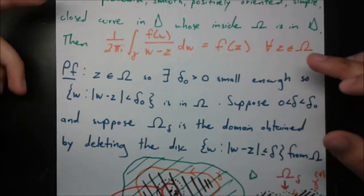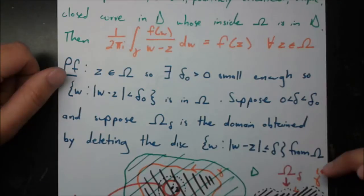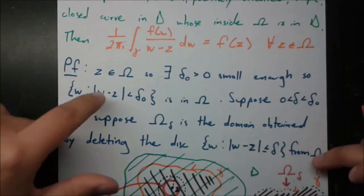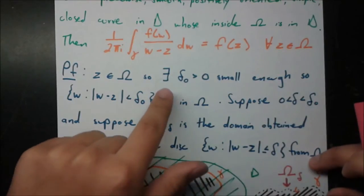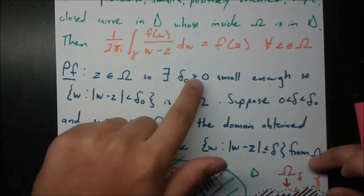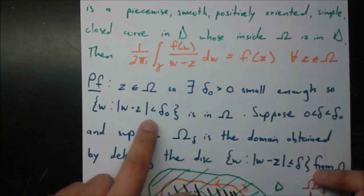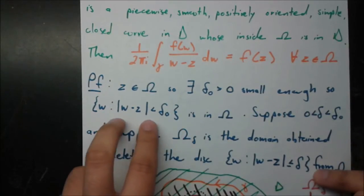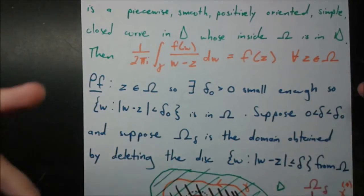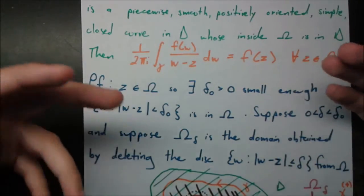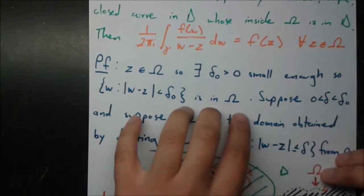But first, let's go through a proof — it's not as bad as the last one. The proof starts: Z is an element of omega, so there exists a delta_0 greater than 0, small enough so that the disk — the modulus of W minus Z less than delta_0 — is in omega. We're using W as our independent variable and Z as a certain fixed complex number.